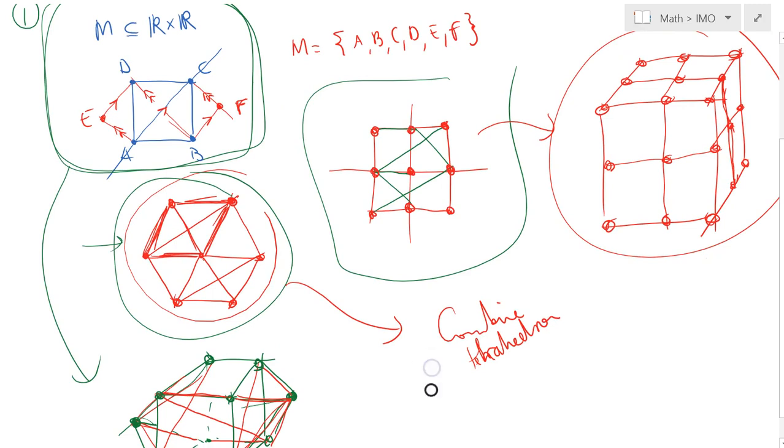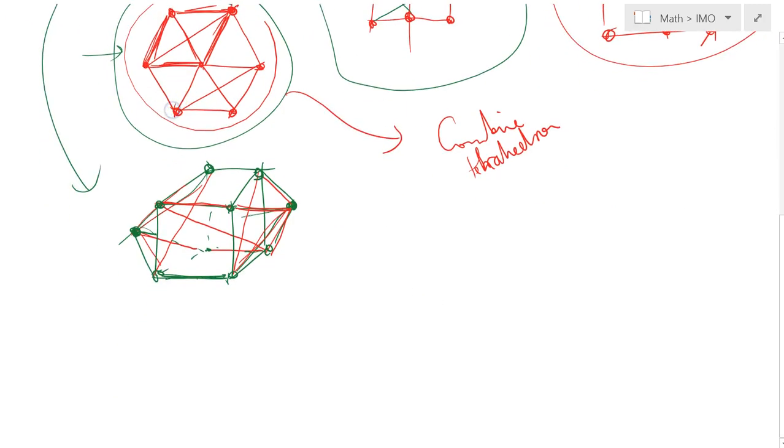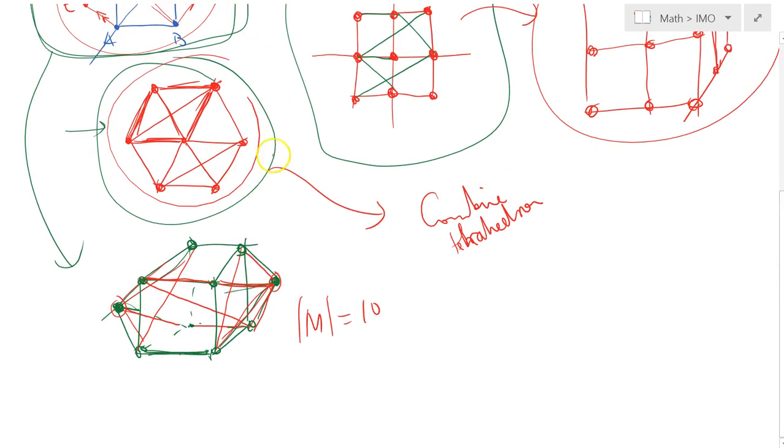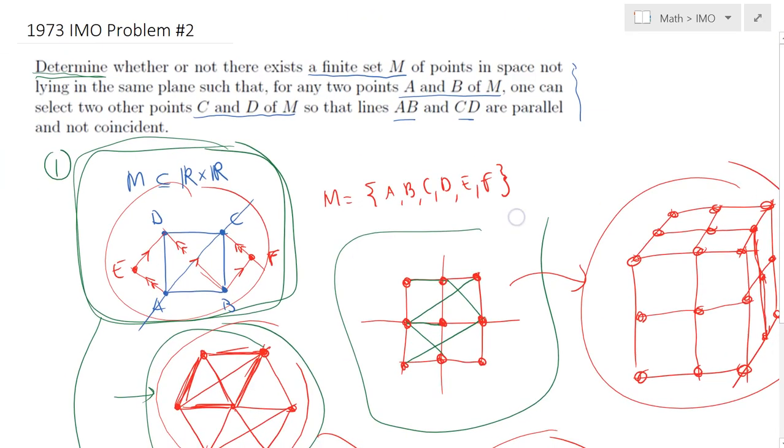Another example would be the counterpart of this one, which is this one here. This one has 10 points: the eight points of the cube and then we added two points on the sides. That does the trick. Finally, I claim the tetrahedron should work, but it's kind of hard to draw it. That solves the problem in an affirmative sense. Hope you enjoyed it and looking forward to seeing you in our next lecture.